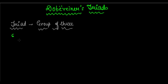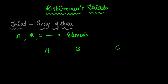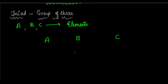So what did he do? He took three elements — suppose A, B, and C are three random elements. He arranged them in groups of three in such a way that the atomic mass of B, the middle element, is equal to the average of the atomic masses of A and C. So MB equals MA plus MC divided by 2.